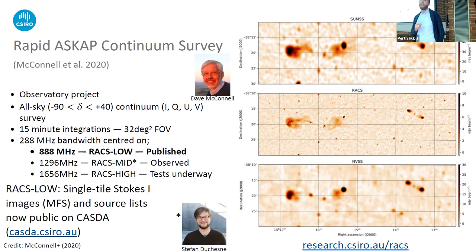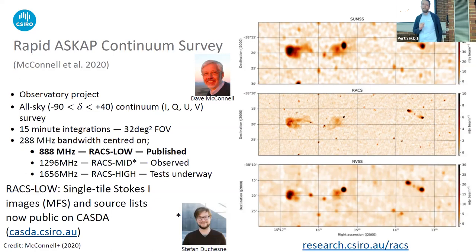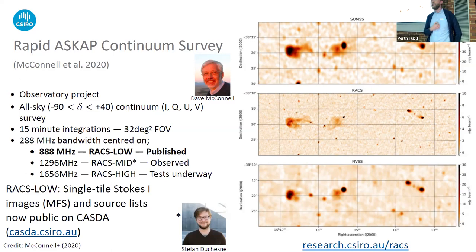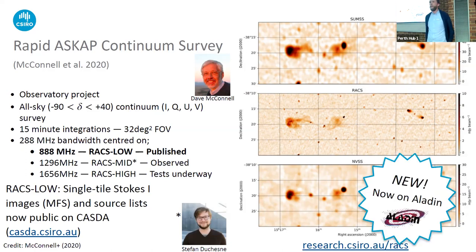RACS has been broken down into three components matching each of the three bands ASKAP can be tuned to. RACS-Low centred on 888 MHz has now been processed and published. RACS-Mid centred on about 1300 MHz has been observed and is currently being processed by Stefan, who recently joined CSIRO. Tests for the high-band RACS are now underway. Images and source lists are now publicly available on CASDA. The remarkable increase in resolution compared to previous large-area surveys — SUMSS and NVSS — is visible here: RACS-Low achieves on average about 15 arcsecond resolution and an RMS noise of about 300 microjansky per beam. As of just a couple of weeks ago, RACS-Low is now available on Aladin.